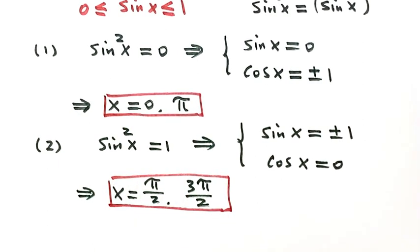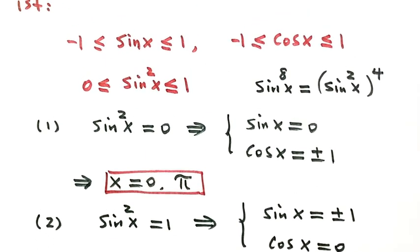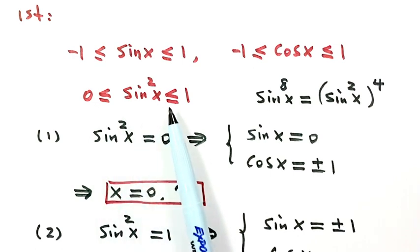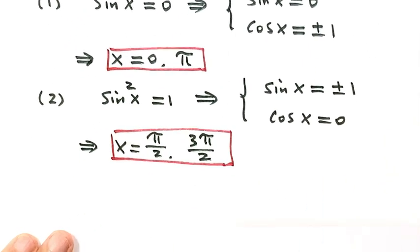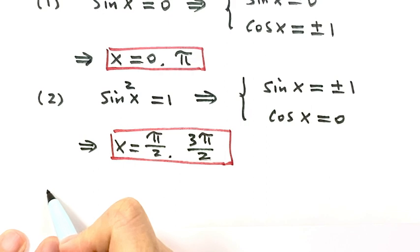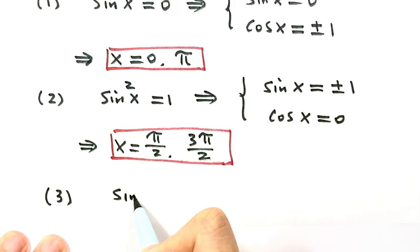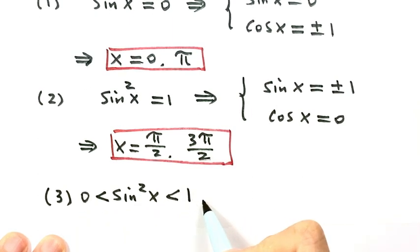Now let's see the third case: sine x squared is strictly between 0 and 1, which also means cosine x squared is strictly between 0 and 1.